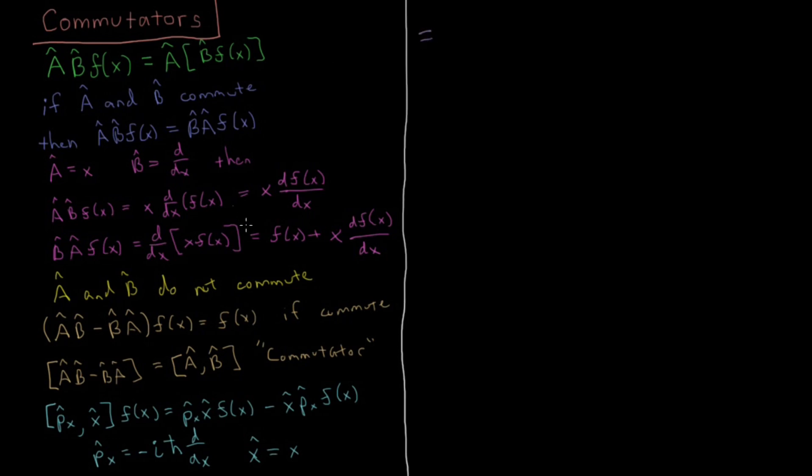Continuing on, if we substitute in from the previous lines, we have minus i h-bar d/dx times x times f of x, minus x minus i h-bar d/dx acting on f of x. We see there's a minus i h-bar in both terms, so let's pull out the minus i h-bar. We have the derivative of x times f of x minus x times the derivative of f of x with respect to x.